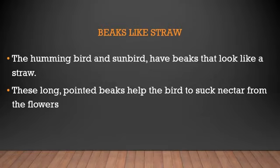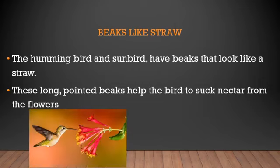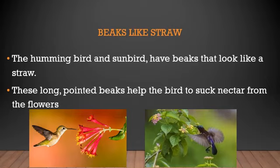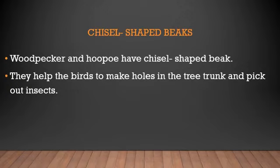Next is the beak shaped like a straw. Hummingbirds and sunbirds have a beak that looks like a straw — the kind you use for drinking juice. Hummingbirds are special; they are the only birds that can fly backwards. These long pointed beaks help the birds to suck nectar from flowers. You can see examples of the hummingbird and sunbird, both with straw-like beaks to collect nectar.